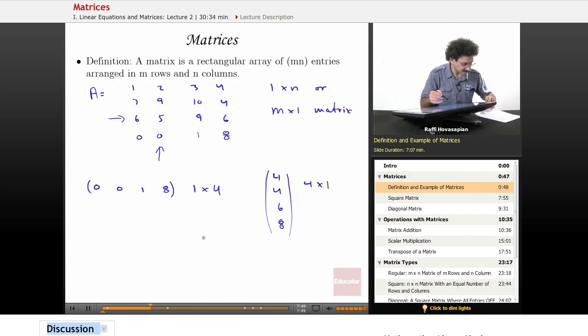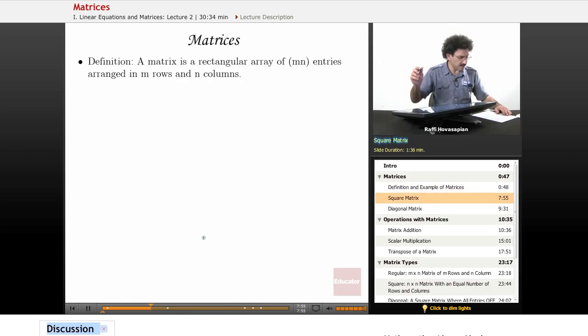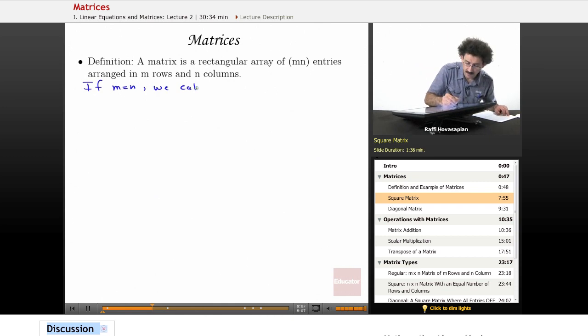Sometimes it's better to write them as columns or rows because it helps to understand what's going on, especially when we talk about matrix multiplication. But in general, both this and this are considered four vectors.